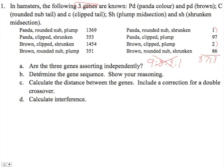Now we come to a part that a lot of students find kind of tricky: determining the gene sequence. You should probably use logic to do this. You could theoretically map all the genes and hope they fit, but in my experience as an instructor, most times this strategy does not work. Remember that the parental classes are the ones with the largest numbers of progeny. You can assume that these are the parents that were originally crossed to make the F1, and the F1 was test-crossed to give these data. You could come up with the two parental classes. One of them would have been PANDA.